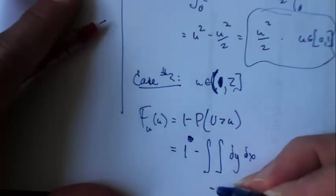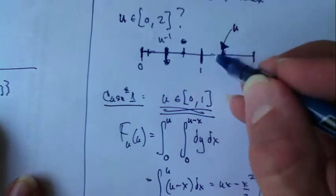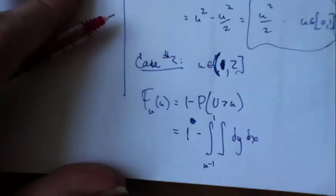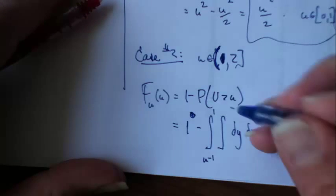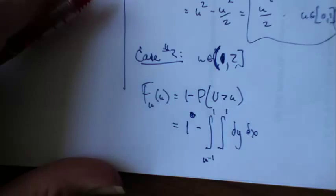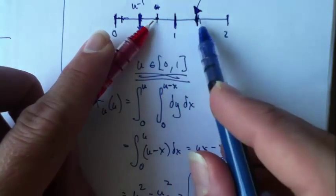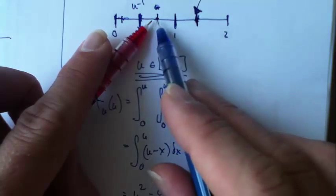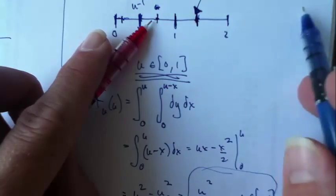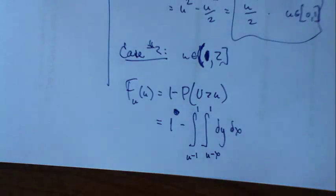Now where does y go? It tops out at 1, for sure. It can't be anything more than that. What's the smallest it can be? Let's fix x somewhere. For their sum to be at least u, y has to go from u minus x up.